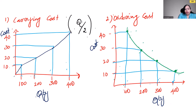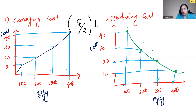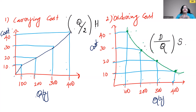So carrying cost = (Q/2) × H, where H is the holding or carrying cost per unit. When it comes to ordering cost — how you place an order — you need people to do the work, telephone calls, prepare documents, and other costs, which is called setup cost or ordering cost. Based on the demand, you order the quantity. So ordering cost = (Demand / Q) × S, where S is the setup or ordering cost. Higher quantity means fewer orders and lower ordering cost; lower quantity means more orders and higher ordering cost.